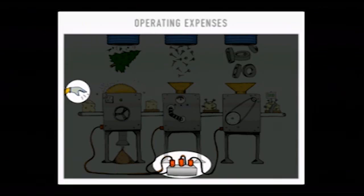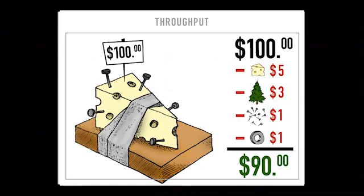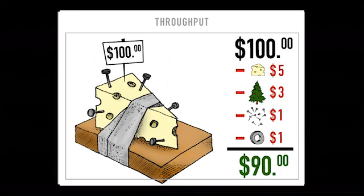The third bucket is throughput. If I sell this widget for $100 and subtract out the direct materials, I have $90. Throughput is the rate at which you generate money through sales. So if I sell one widget in a day, I have $90 worth of throughput. If I sell 100 widgets in a day, I have $9,000 worth of throughput. One — bad. One hundred — good.